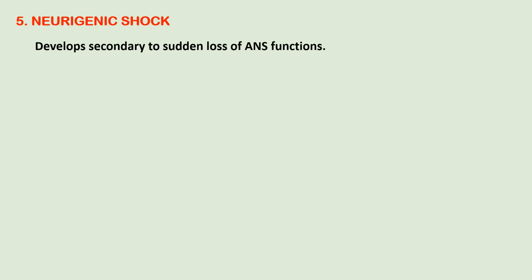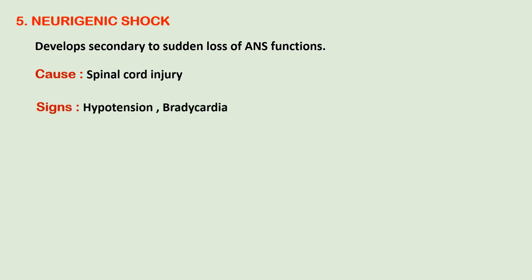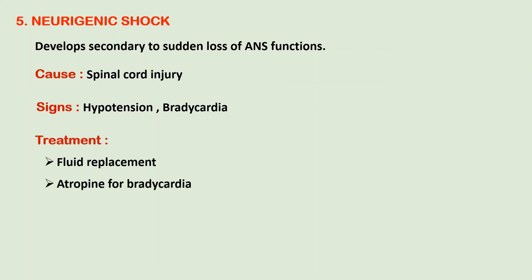Finally, neurogenic shock develops due to sudden loss of autonomic nervous system function, often caused by spinal cord injury. Signs and symptoms include hypotension and bradycardia. Treatment includes fluid replacement, atropine for bradycardia, and ephedrine. That concludes the discussion on shock.